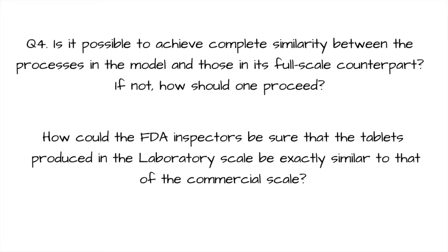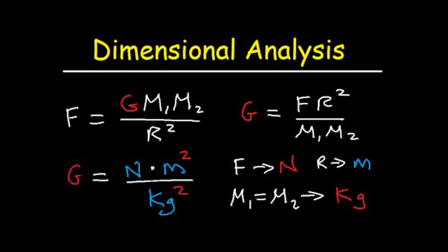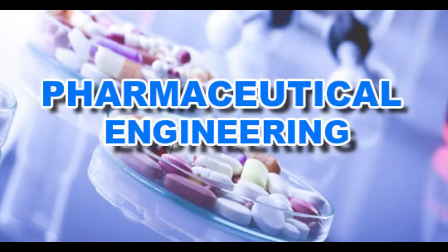How could the FDA inspectors be sure that the tablets produced in laboratory scale are exactly similar to those of commercial scale? The answer to all the above questions is a problem-solving method called dimensional analysis. This video is part of a pharmaceutical engineering video series where we will be discussing topics which are generally not covered in class due to time constraints.